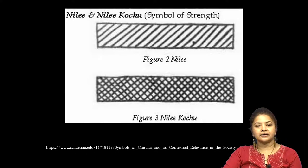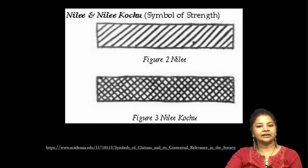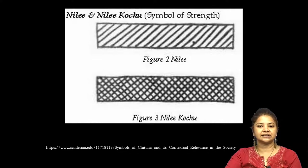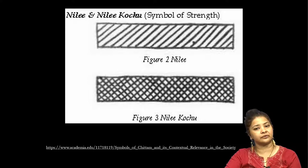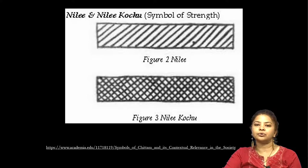This is Nili and Nili Koche. The Devaru community builds houses using bamboo arranged in a diagonal fashion, which is called Nili. When one more layer of bamboo is placed diagonally over the first layer, it is called Nili Koche. It symbolizes strength, because the bamboo hut gives protection from natural calamities and protects the family.